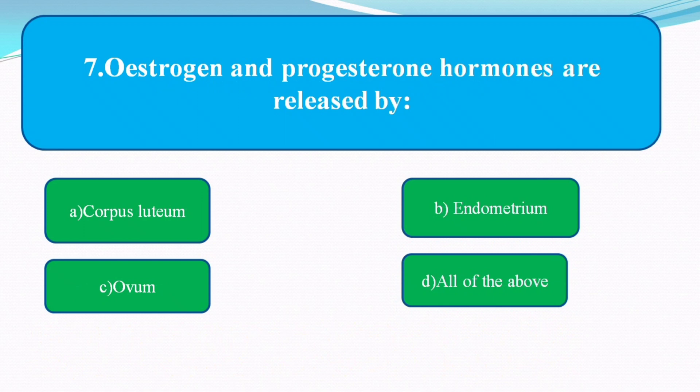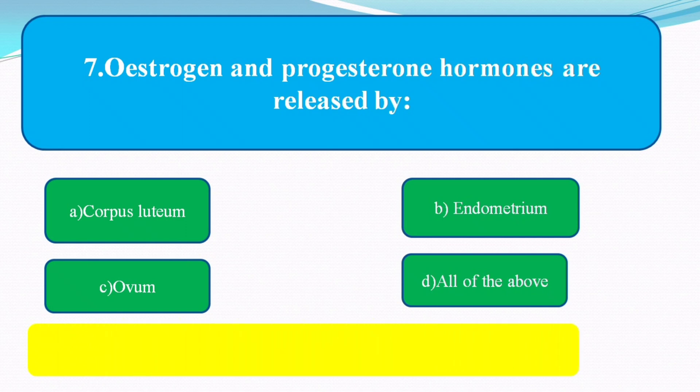Estrogen and progesterone hormones are released by? The answer is the corpus luteum.